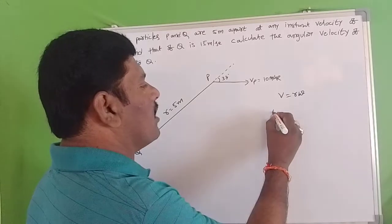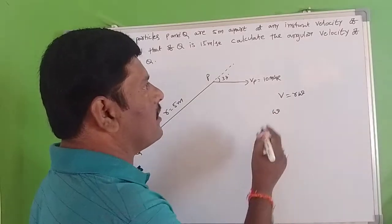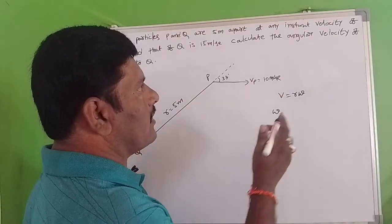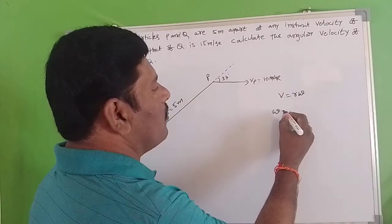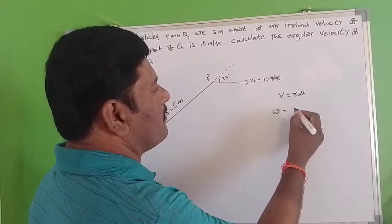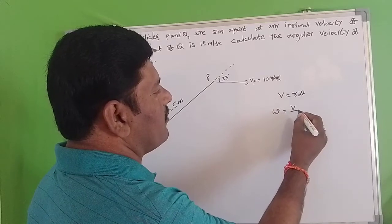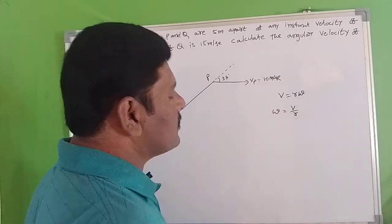Omega is the angular velocity. Now we find out the angular velocity. Omega can be written as V by R.